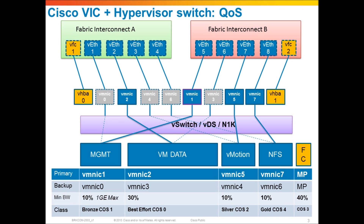I wanted to make sure that vMotion always had at least one gig of bandwidth — a pretty typical requirement for VMware designs. I also wanted management traffic to have one gig available but never use more than that. And I wanted virtual machines to be able to use as much bandwidth as possible if available — all 10 gigs if possible. Same thing with vMotion: if all 10 gig of bandwidth is available, we might as well use it.